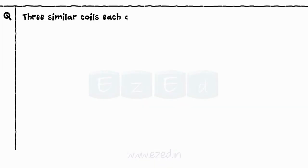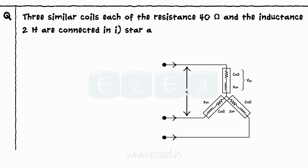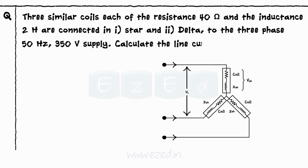Three similar coils, each of the resistance 40 ohms and the inductance 2 henry are connected in star and delta to the three phase 50 hertz, 350 volts supply. Calculate the line current and the total power absorbed.